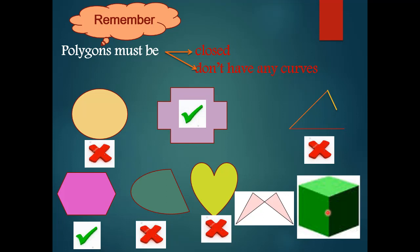No, teacher. Why? Because a polygon must be a 2D shape — two-dimensional. This cube is a 3D shape, so it's not a polygon. Also, here we have a shape that is closed and has line segments, but it has intersecting lines, so it's not a polygon either.